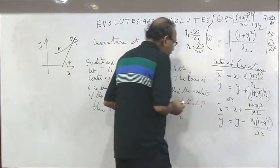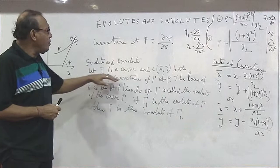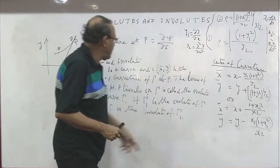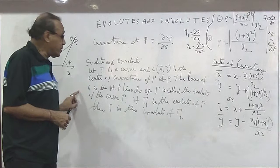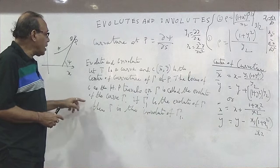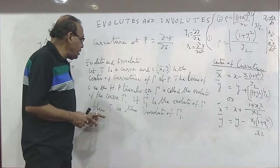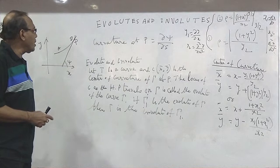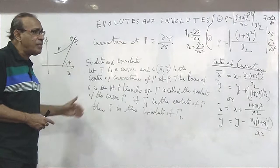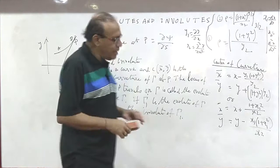So two things are done — radius of curvature and center of curvature. Now the third concept: let τ be a curve and C(x̄, ȳ) be the center of curvature of the curve τ at point P. The locus of C as point P moves along the curve is called the evolute of the curve τ. If τ₁ is the evolute of τ, then τ is the involute of τ₁. We can find the evolute by taking the normal and using the concept of the envelope of families. Let us do one problem to help our basic understanding.